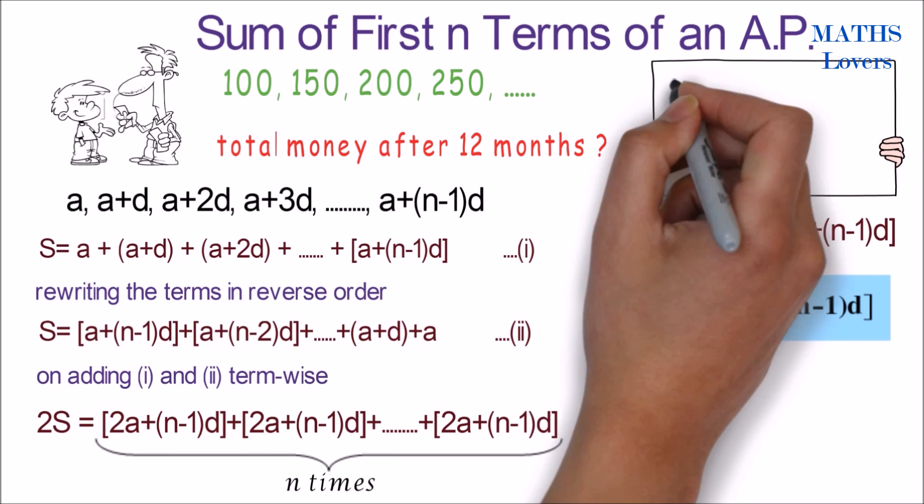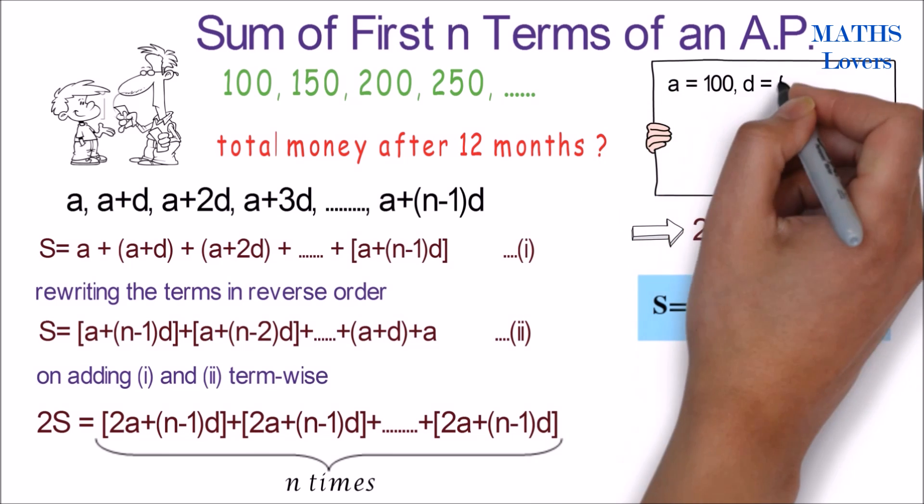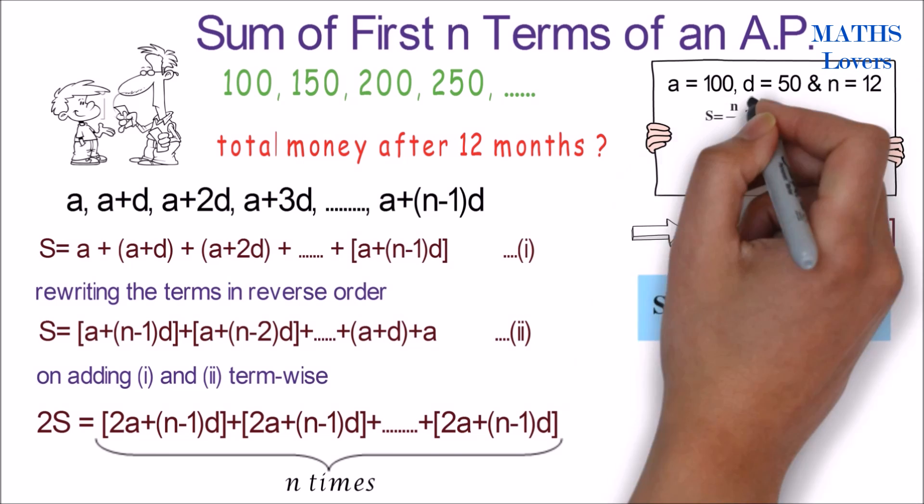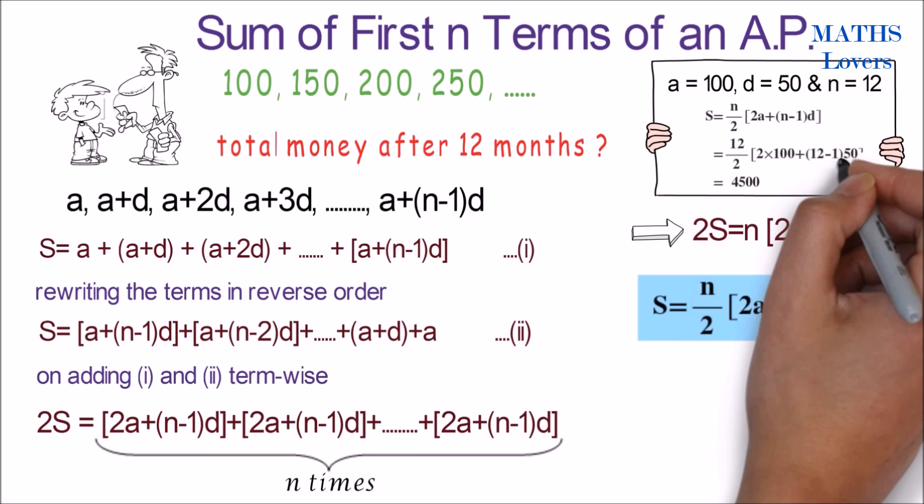Like in the above example, a is 100, d is 50, and n is 12. So on putting these values in the formula, we get sum equals 4500.